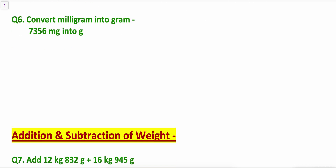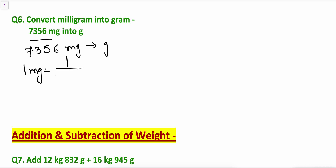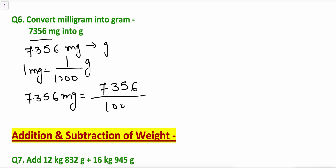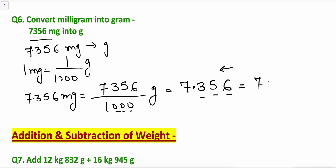Now convert milligrams into grams. Convert 7356 milligrams into grams. Since 1 milligram equals 1/1000 of a gram, 7356 milligrams will be 7356 divided by 1000 grams. The division by 1000 is simple: write the number and place a decimal after 3 digits from the right. The answer is 7.356 grams, or 7 grams and 356 milligrams.